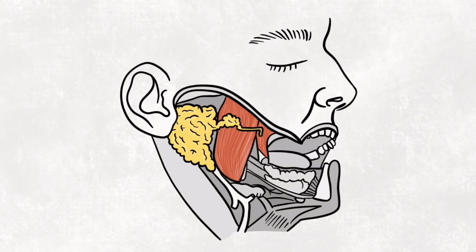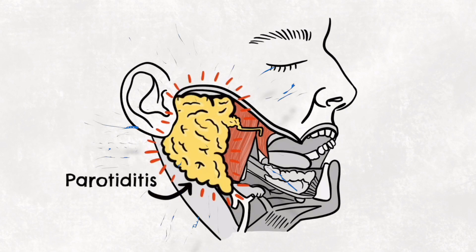Parotitis refers to inflammation of the parotid gland — think 'itis', inflammation. Usually it's a result of an infection. The parotid gland is enclosed in a tough, fibrous capsule, which limits swelling of the gland, producing pain when there's inflammation. The pain produced can be referred to the external ear. Sensory innervation to the gland is provided by the auriculotemporal nerve, and as the name suggests, this nerve also supplies sensory innervation to the external ear.